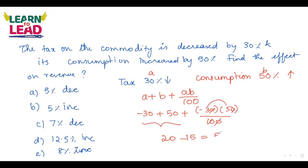Calculating: minus 30 into 5 gives minus 15, so the result is plus 5 percentage — a 5% increase. That is your answer. The formula we use is: a + b + (ab/100).